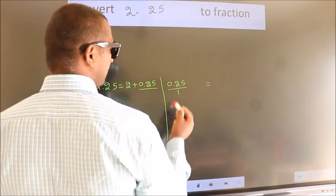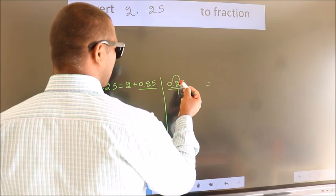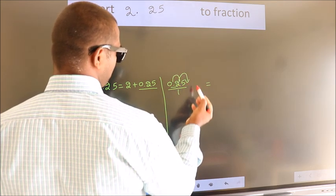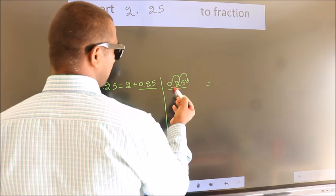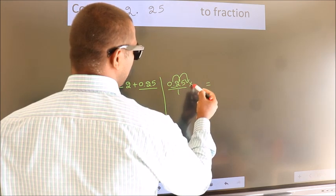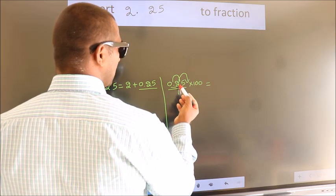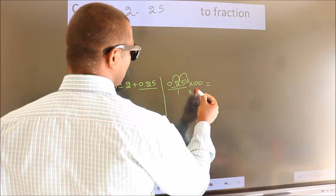we have to move this decimal after 2 numbers. To move this decimal after 2 numbers, multiply it with 100. Whatever we are multiplying in the numerator, in the denominator also do the same.